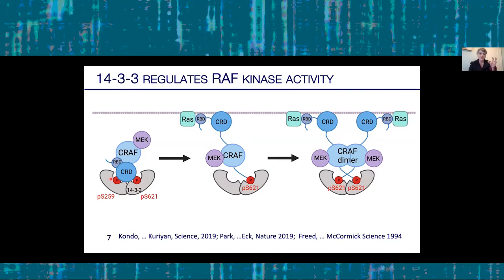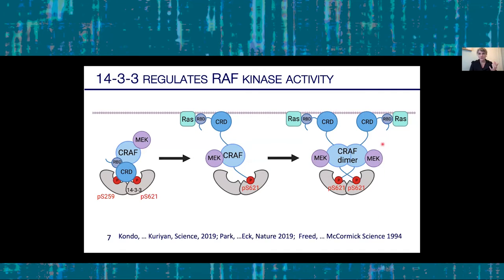Phosphatase SHP2 comes in and dephosphorylates the position at S259, while maintaining the binding site at S621. This opens the monomeric CRAF or BRAF kinase, allowing it to interact with the membrane and with RAS. Then a second RAF kinase comes in, now stabilized by 14-3-3 binding to two RAFs, allowing the active dimer to form and phosphorylate MEK. Kinase inhibitors inhibit this active state. But what if instead of trying to inhibit the CRAF dimer, we were to try to stabilize the quiescent kinase-inactive state by stabilizing its interaction at S259?